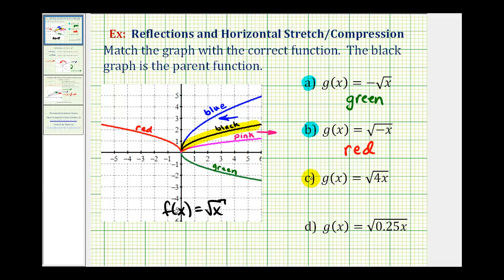So now we're left with c and d, which will be horizontal stretches or compressions. When the coefficient of x is greater than one, it's going to be a horizontal compression, which means it'll take the black graph and compress it horizontally, forming the blue graph. And when we have g of x equals the square root of 0.25x, notice that b is between 0 and 1 — this will be a horizontal stretch, so if we take the black graph and stretch it horizontally, we would have the pink graph.